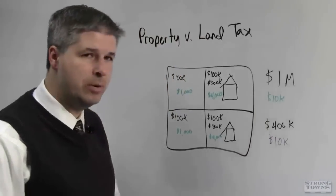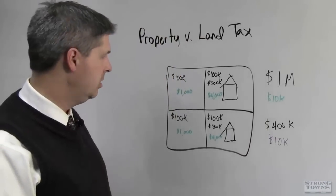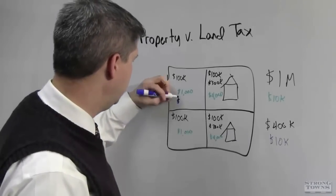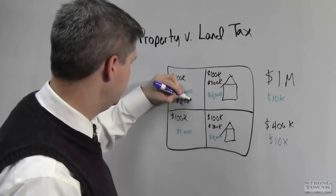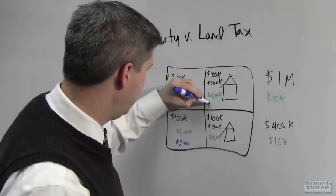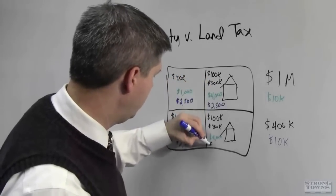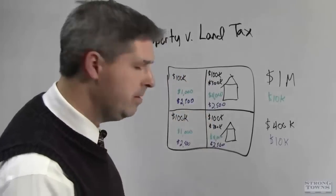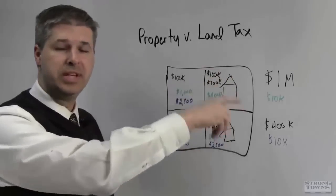But the way that tax is now distributed is vastly different. Now this place is paying $2,500. This place is paying $2,500. This one is paying $2,500. And this one is paying $2,500. Because the land is all worth the same.